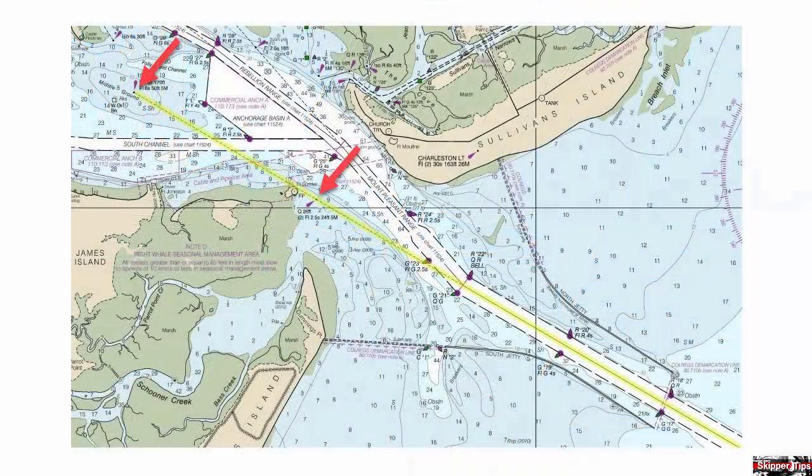Use a transit to stay in the center of the channel. Some transits are built by the U.S. Coast Guard or a government agency for big ships that carry large amounts of draft, but you can also use two objects that line up, like a church and antenna or a tank and lighthouse.